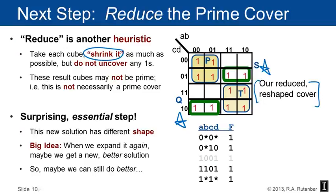After reduction, the s cube becomes just the right two ones in the second column, and the q cube becomes just the left two ones in the bottom row. This reshaped cover looks strange — it's a bad Karnaugh map solution — but it is an essential step. From this new seed shape we will expand again, and perhaps when we expand we'll find a superior solution. This is the critical step: reducing to a non-overlapping, non-prime cover so that expansion can find a different local minimum.